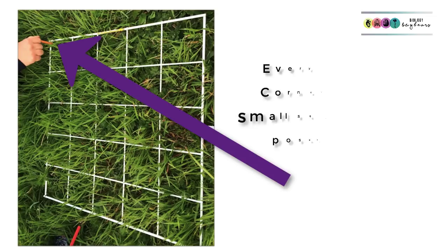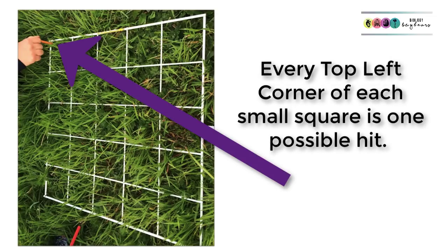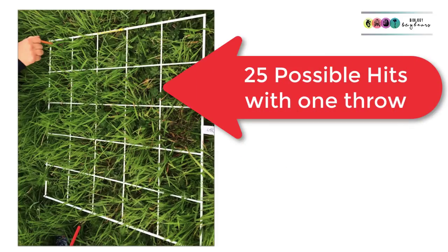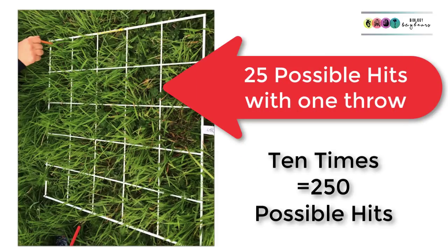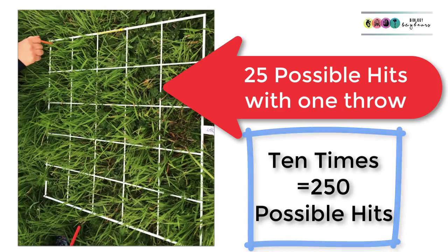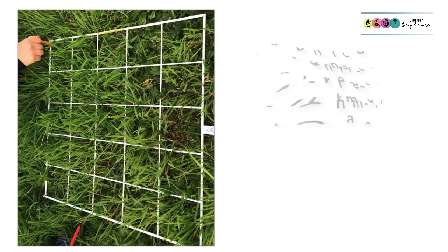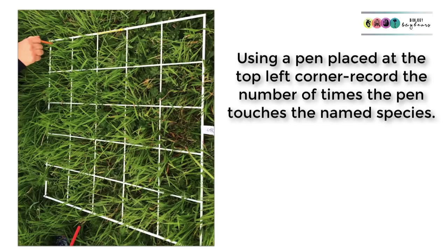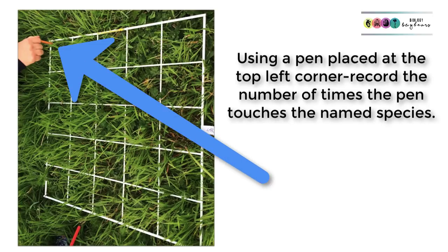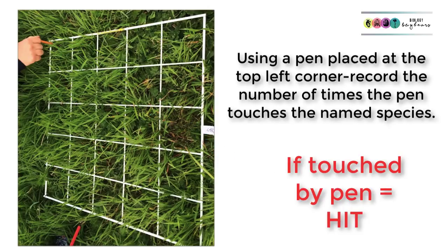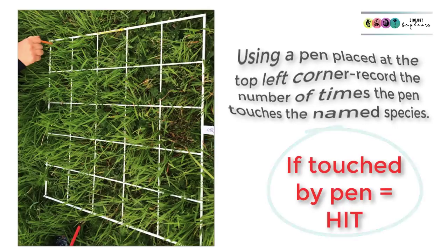The grid is divided into hits — we said that every top left-hand corner was a hit. You count the number of hits in total in that quadrat, and you're going to throw the quadrat 10 times, giving 250 possible hits in total. With the grid quadrat in position, place a pen through the top left-hand corner of each small square; if it touches the named species, it's a hit and you record this.